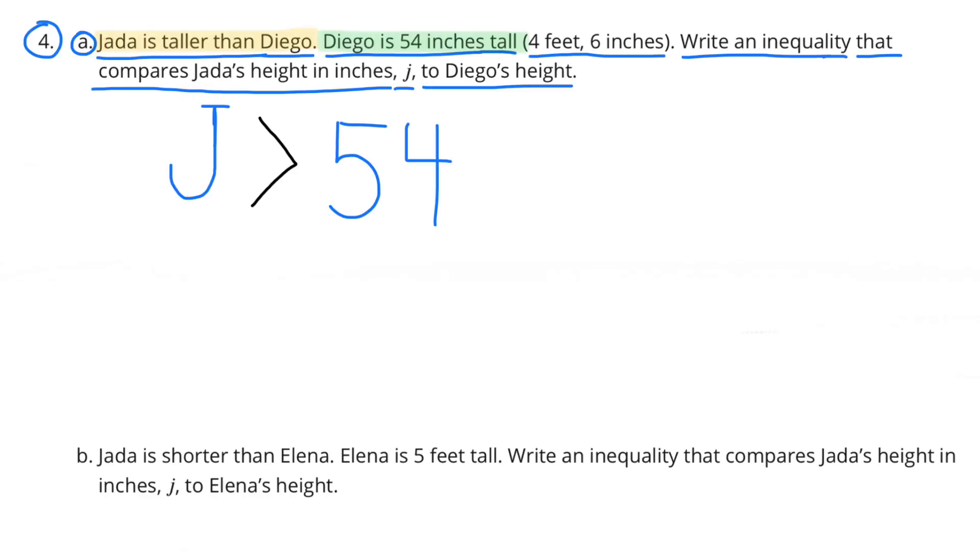Number 4. Part A: Jada is taller than Diego. Diego is 54 inches tall, that's 4 feet 6 inches. Write an inequality that compares Jada's height in inches, J, to Diego's height. This inequality can be expressed as J is greater than 54.